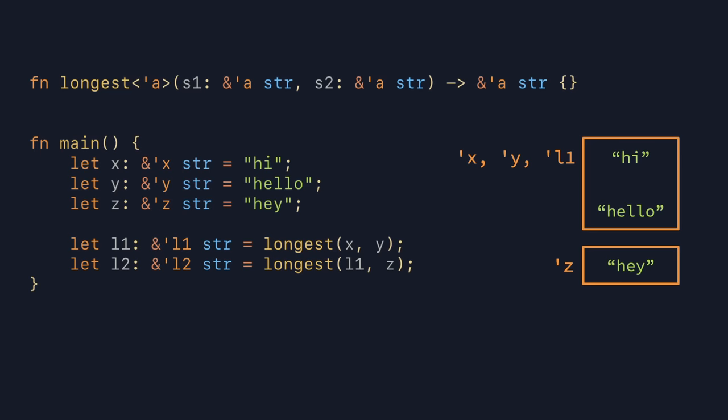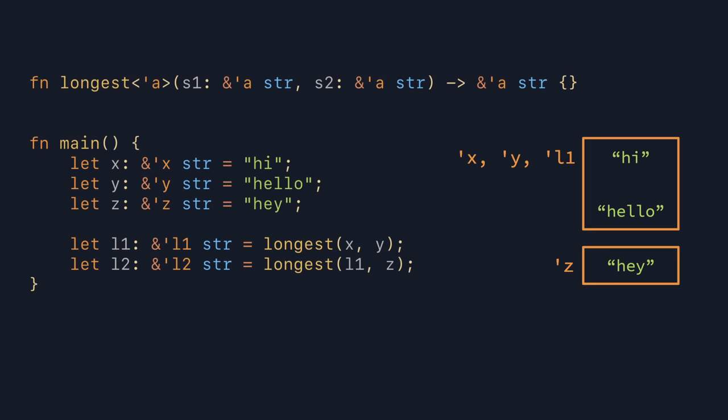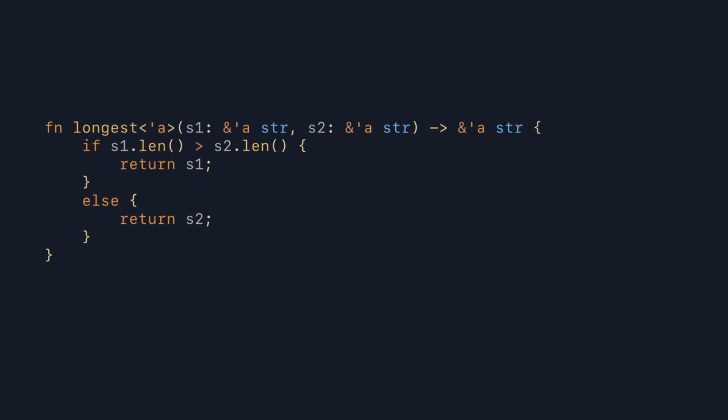In the last section, we talked about how the signature of the function 'longest' seemed as though all references involved had to have the exact same lifetime, and how that would be pretty annoying. For the next example, let's pretend this was actually how lifetimes worked — two references using the same lifetime parameter need to have the exact same lifetime. Our goal is to change the function 'longest' to still allow the user to pass in strings with different lifetimes. To achieve this, we have to use multiple lifetime parameters — one for each input and one for the output. However, making this change breaks the code, because the references we're trying to return are now unrelated to the output lifetime. But we can fix this by adding outlives constraints. And this problem is what subtyping and variance are about — but that's a topic for another video.